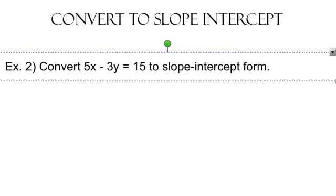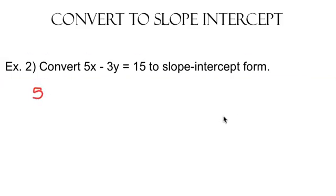For the next problem, what we're going to do is we're going to convert 5x minus 3y equals 15 to slope-intercept form. And again, if you're playing along at home, you probably recognize this form. It is, that's right, standard form.